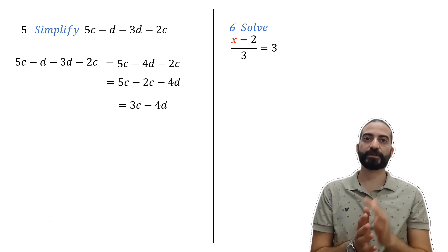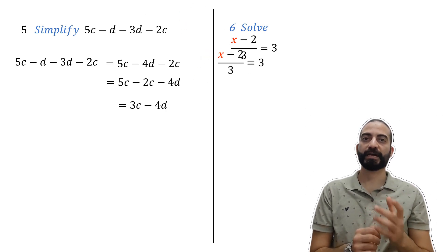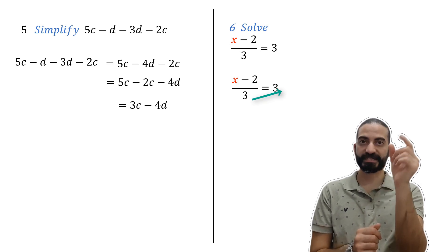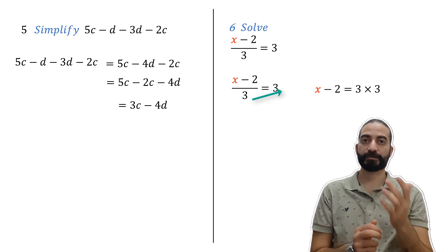Solve x minus 2 over 3 equals 3, which means we must get x. When we have this form we can cross multiply, meaning this number in the denominator becomes here with the multiplication sign.